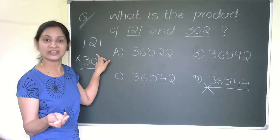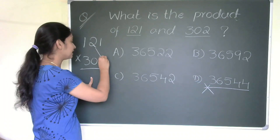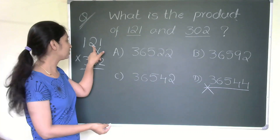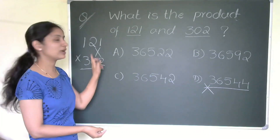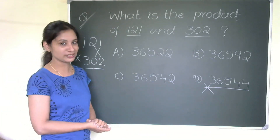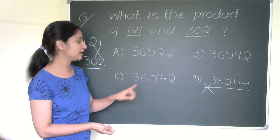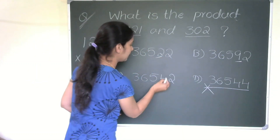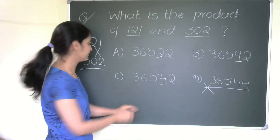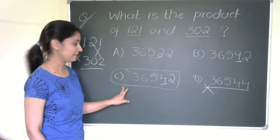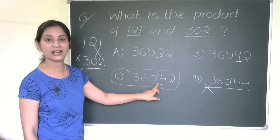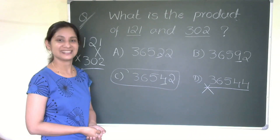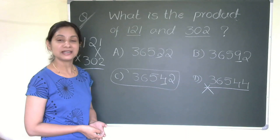The very next step in the crisscross method: two twos are four, plus one multiplied by zero — that is zero — so four plus zero is four. Our next place value is four. Looking at the tens place, only option C has four in the tens place. So our correct answer is C: 36,542. We solved it quickly!